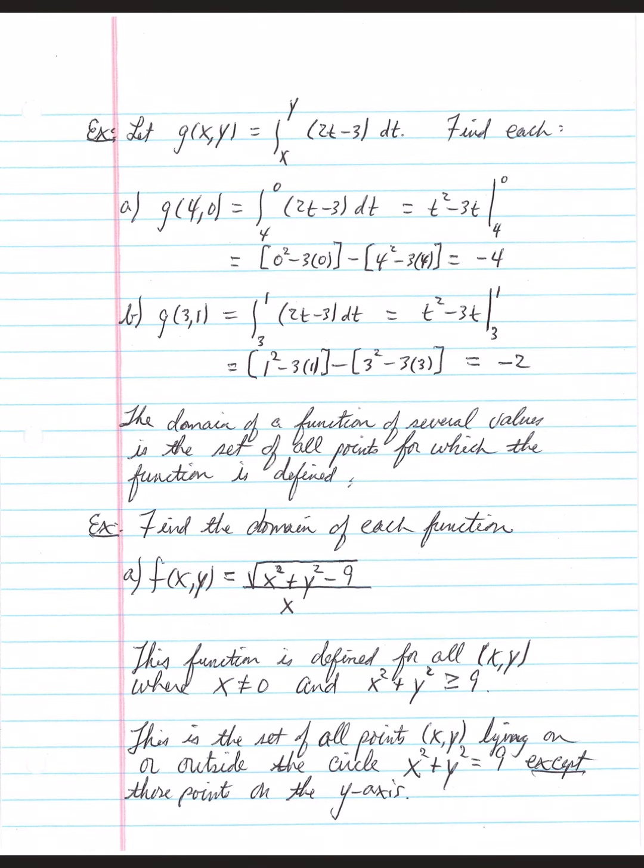So what does that tell us? x can't be 0, and x squared plus y squared has to be greater than or equal to 9. Well, that tells us that we have the set of all points lying on or outside the circle x squared plus y squared equals 9. That's a circle centered at the origin with a radius of 3, but due to the greater than or equal to, you can lie on the circle or outside of it. Also, keep in mind, x can't be 0, so your domain is a set of all points lying on or outside the circle except those points on the y-axis. Anywhere on the y-axis, x is 0, and we don't want that.